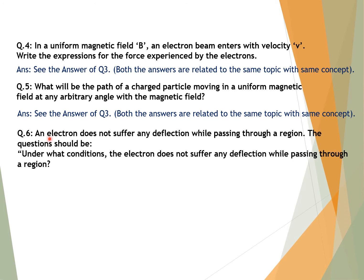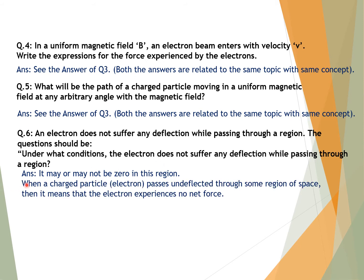Question number six: Under what conditions does an electron not suffer any deflection while passing through a region? Answer: When a charged particle such as an electron passes undeflected through some region of space, it experiences no net force. F = Q(V × B) and F = QVB sinθ. The magnetic field in the region may be zero, or the electron may be moving parallel or anti-parallel to the magnetic field (θ = 0° or 180°).